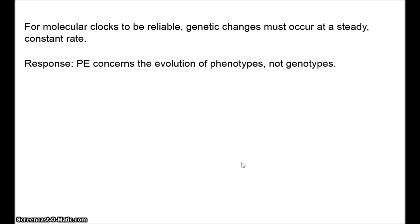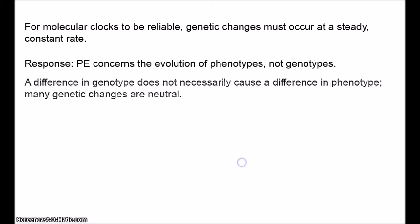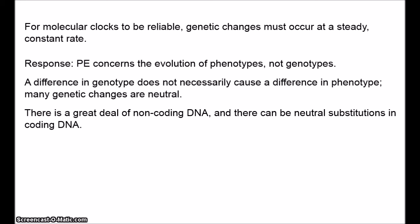The genotype-phenotype distinction: the genotype of an organism is the genetic information passed on from its parents — the genes encoded by its DNA. The phenotype is its physical characteristics. Importantly, a difference in the genotype doesn't imply a difference in the phenotype. A great deal of genetic change is neutral — the majority of mutations make no difference to an organism's fitness. The genomes of many species, especially eukaryotes, contain large amounts of non-coding DNA that doesn't seem to have any function.